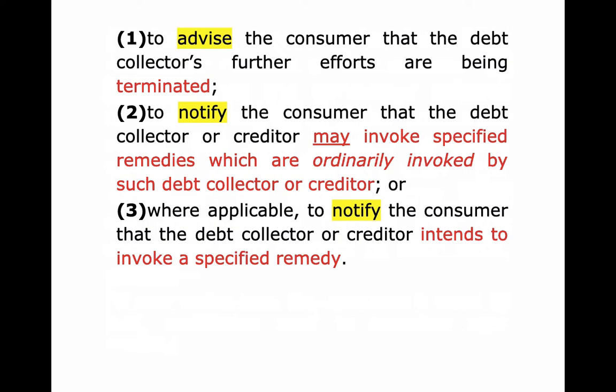Exception two: to notify the consumer that the debt collector or creditor may invoke specified remedies — such as a lawsuit or a lien on your property — which are ordinarily invoked by such debt collector or creditor. If a debt collector says 'be advised we may sue you' but they have never filed a lawsuit in the entire hundred-year existence of their company, then I think they violated this law. It has to be things they ordinarily invoke. And notice: this exception says they 'may' do these things.